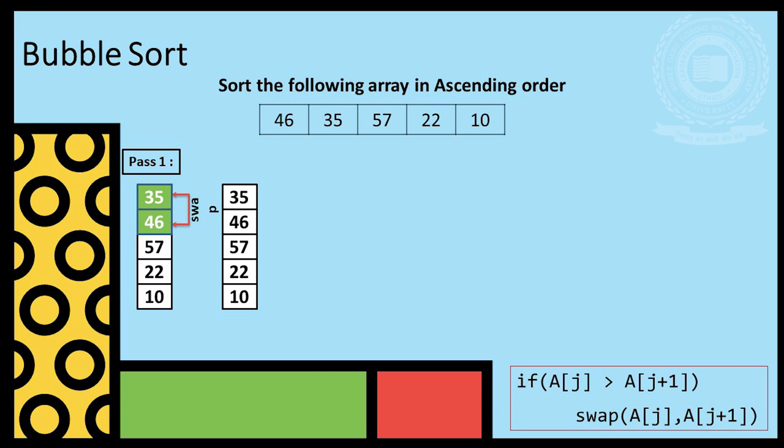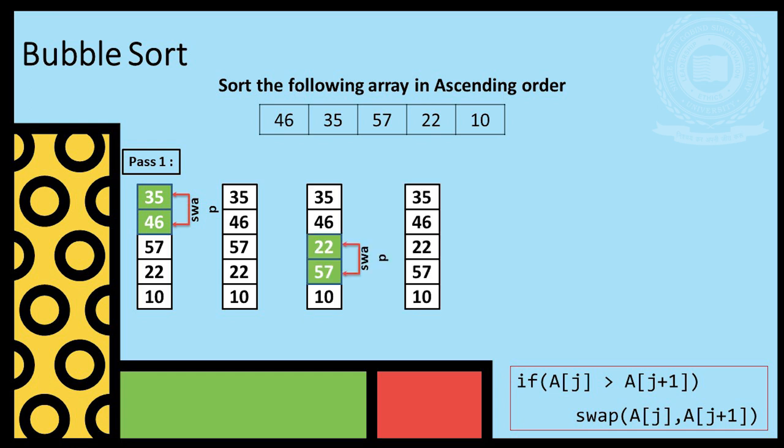Next, we compare 46 and 57 and pass. Next, we compare 57 and 22 and swap. Next, we compare 57 and 10 and swap. And after pass 1, our heaviest element is at the lowest location.